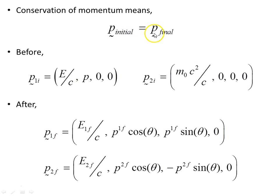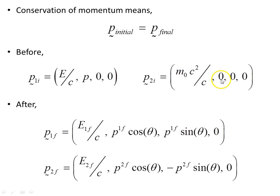Conservation of momentum means initial momentum equals final momentum. Before the collision, the first particle has energy E/c as its zero component and momentum p in the x-direction. The second particle at rest has rest mass energy m₀c² over c as its zero component, with zero spatial momentum. Afterwards, the first particle moves off with a zero component, an x-component, and a y-component. The second particle similarly has a zero component, an x-component, and a y-component — one going up the page, one going down.